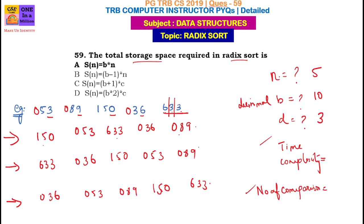How do you calculate the space? Space equals b into n. Base is 10, covering 0 to 9. So the space is b × n. For time complexity, the number of digits d, and the number of keys is n. So time complexity is d × (n + b).